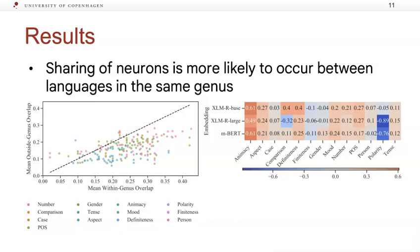We also measure the correlation between neuron overlap and similarity of syntactic typological features. While correlation coefficients are mostly positive, with the exception of polarity,